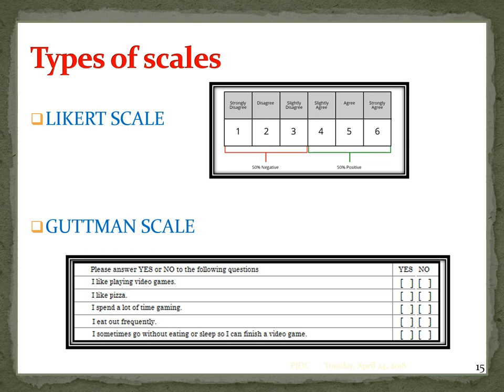In the Guttman scale, I give one mark for yes and zero for no. Then I can tell, for example, out of 100 people this many like playing video games. That is how we calculate the score.